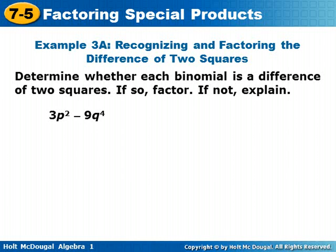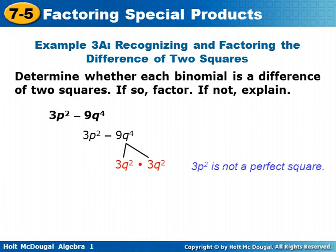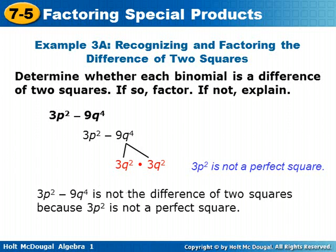Determine whether each binomial is a difference of two squares. If so, factor. If not, explain. For 3p squared minus 9q to the 4th: 9q to the 4th is a perfect square — 3q squared times 3q squared — but 3p squared is not a perfect square. So 3p squared minus 9q to the 4th is not the difference of two squares because 3p squared is not a perfect square.